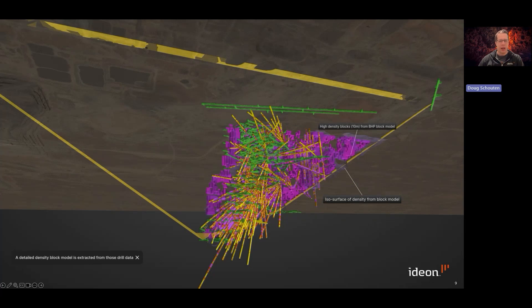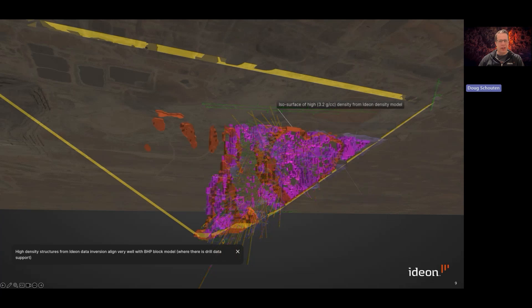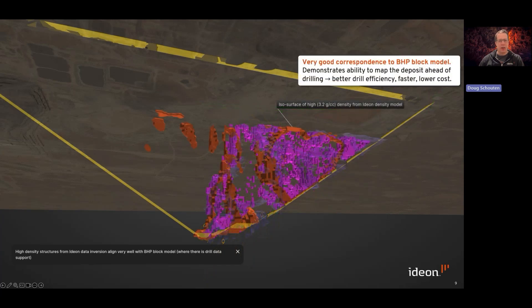We can resolve a block model from that drill data, and the high density blocks are shown here in pink. If we look at the unconstrained muon tomography inversion and wrap a surface around the high density part of the muon tomography density, you can see how well it conforms to the BHP block model.